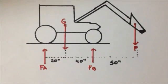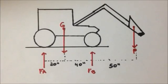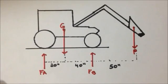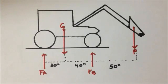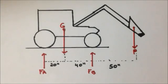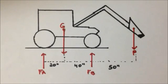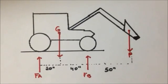As far as our sign conventions go, we will choose any forces directed upward to be positive. Any forces directed downward will be considered negative. For moments, any moment in the clockwise direction will be positive, and any moment in the counterclockwise direction will be negative.